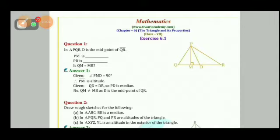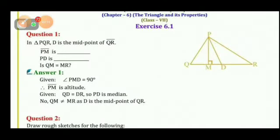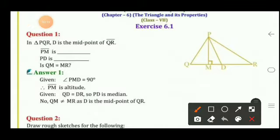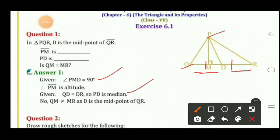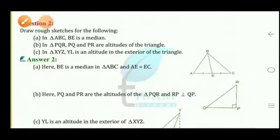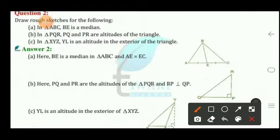Now exercises from chapter 6. Exercise 6.1, question 1: in triangle PQR, D is the midpoint of side QR, so QD = DR. PM is the altitude because it is perpendicular to QR, forming a 90° angle. PD is the median because it divides QR into two equal parts. Question 2: draw a rough sketch. In triangle ABC, BE is the median, so AE = EC.